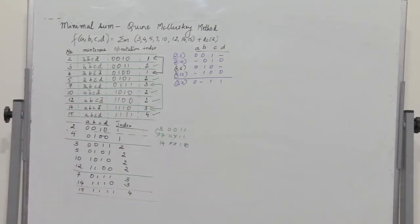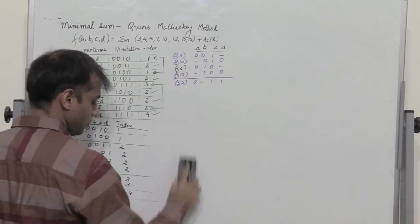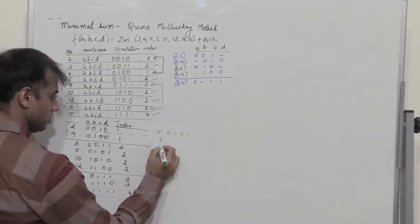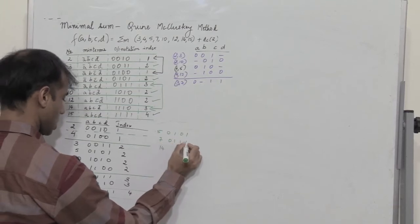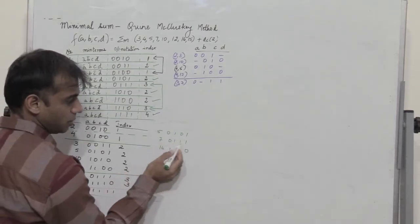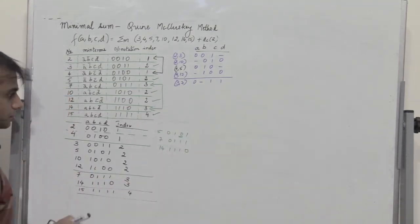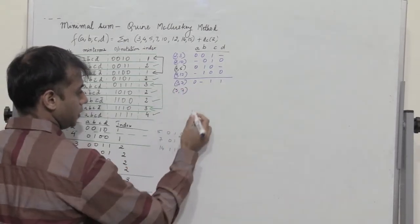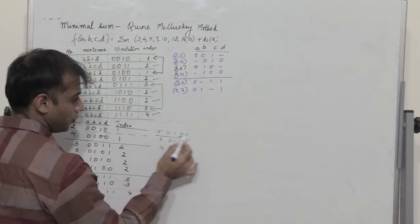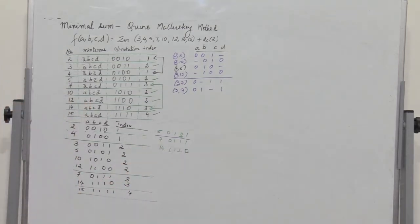Next we move on with 5 compared to 7 and 14. We have 5 (0101) with 7 (0111) and 14 (1110). When I observe, the first, second and fourth bits remain the same except the third bit, so I write 5,7 as 01-1. Comparing 5 with 14, it varies in the first, third and fourth bit positions, so 5,14 is not a combination.